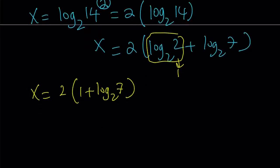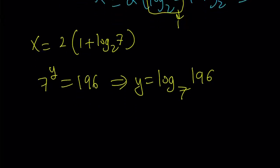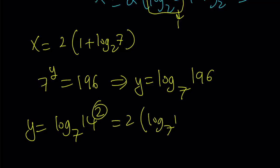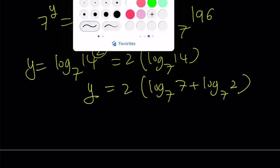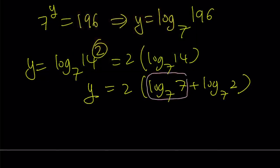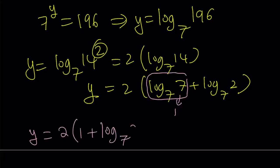Let's go ahead and do the same thing with y. I have 7 to the power y equals 196. From here, y equals log 196. But this time it is in base 7. Great. Let's go ahead and write 196 as 14 squared. And then move the 2, and we're going to get log 14. And now, log 14 can be broken down into log 7 and log 2. But they're both in base 7. Now, log 7 in base 7 is just 1. So, we get y equals 2 times the quantity 1 plus log 2 base 7.